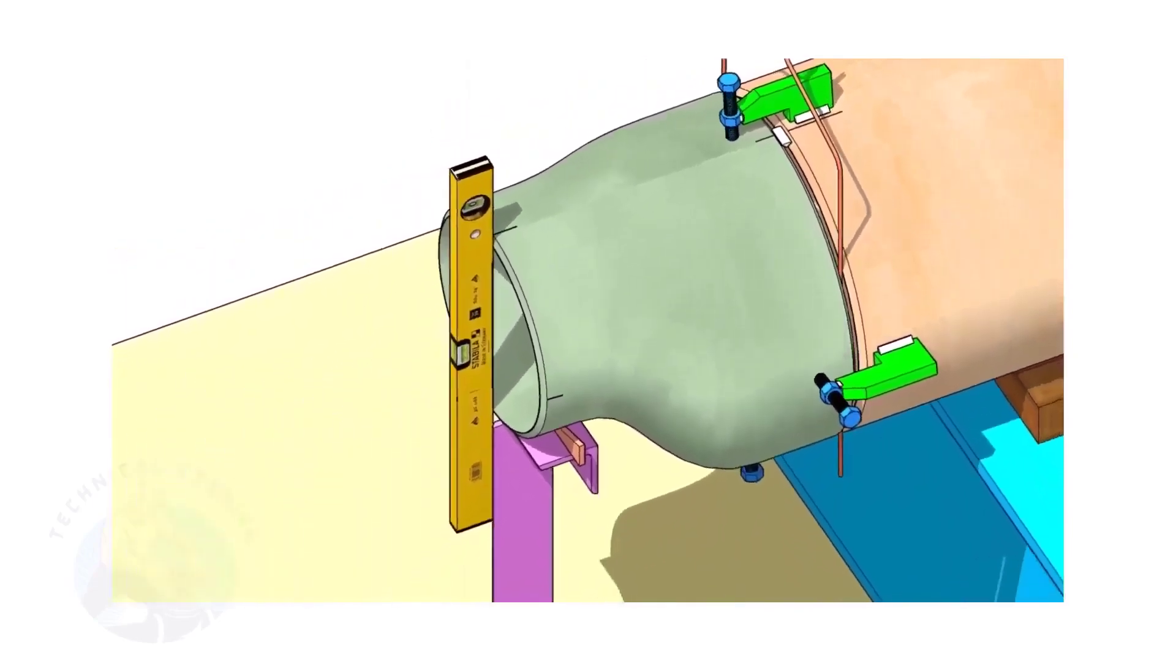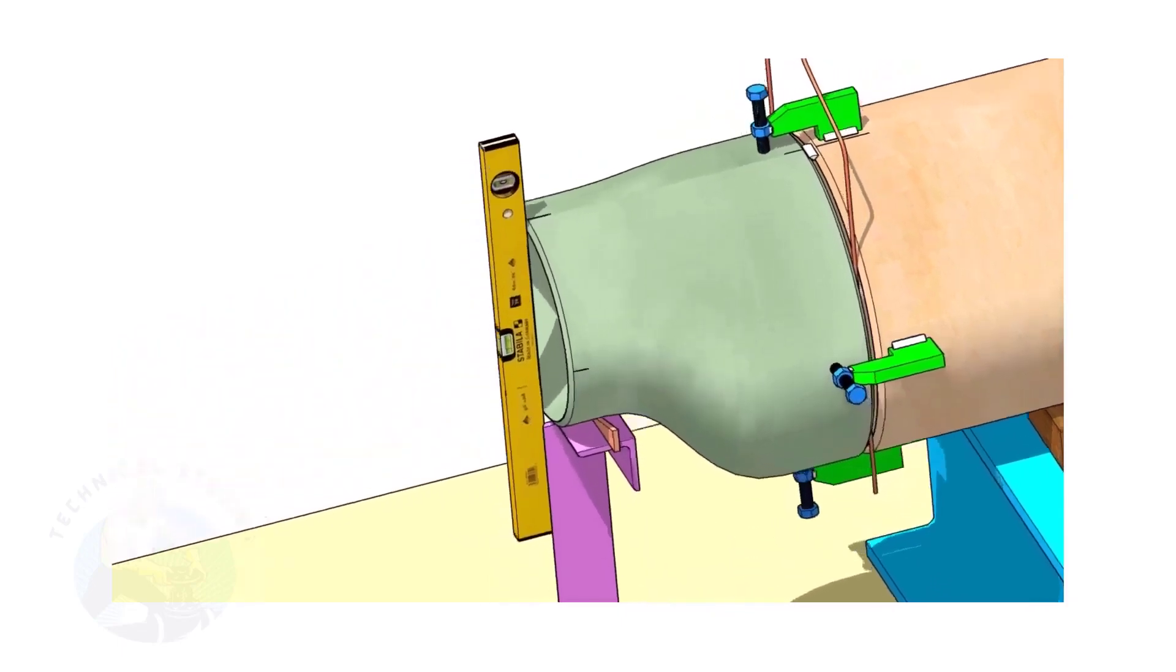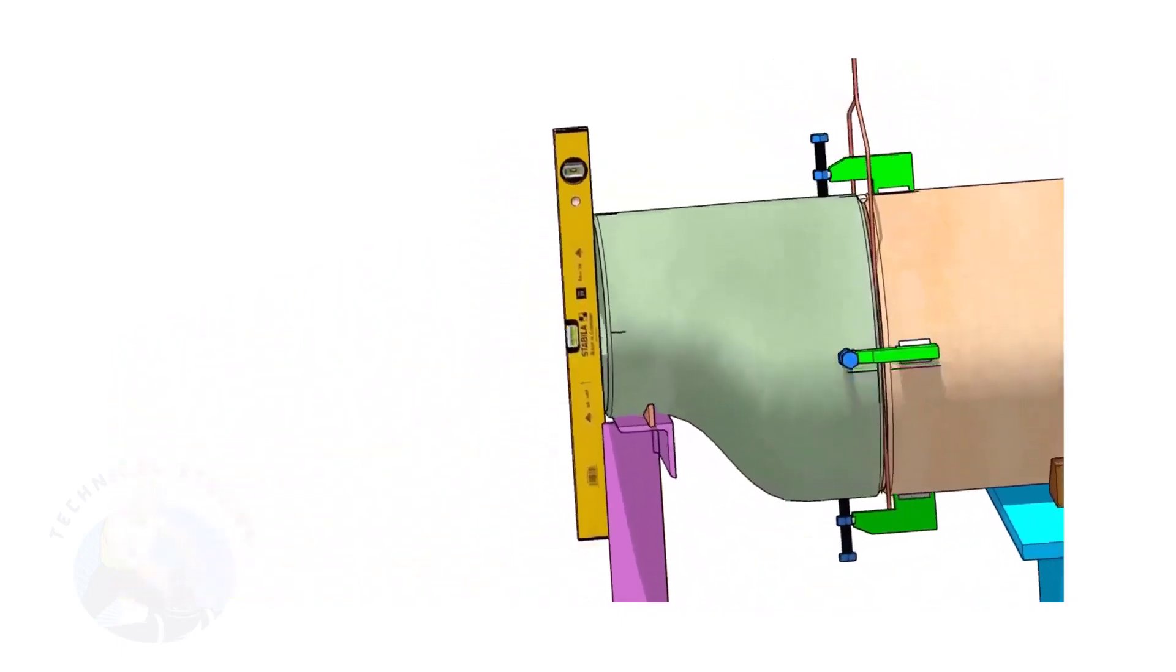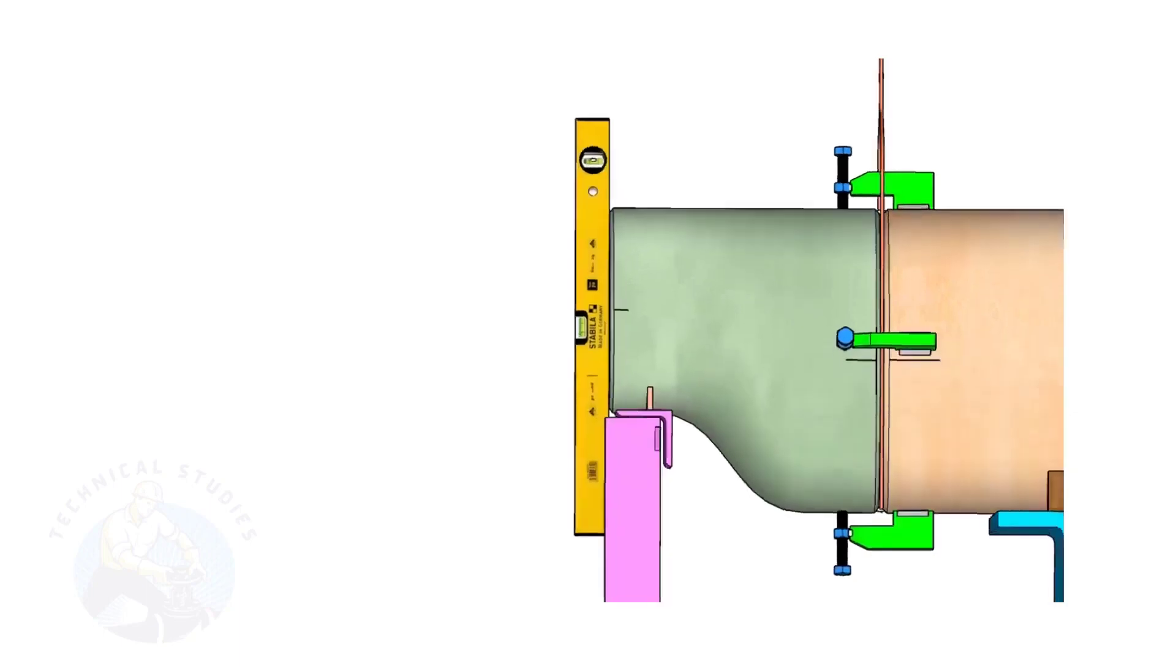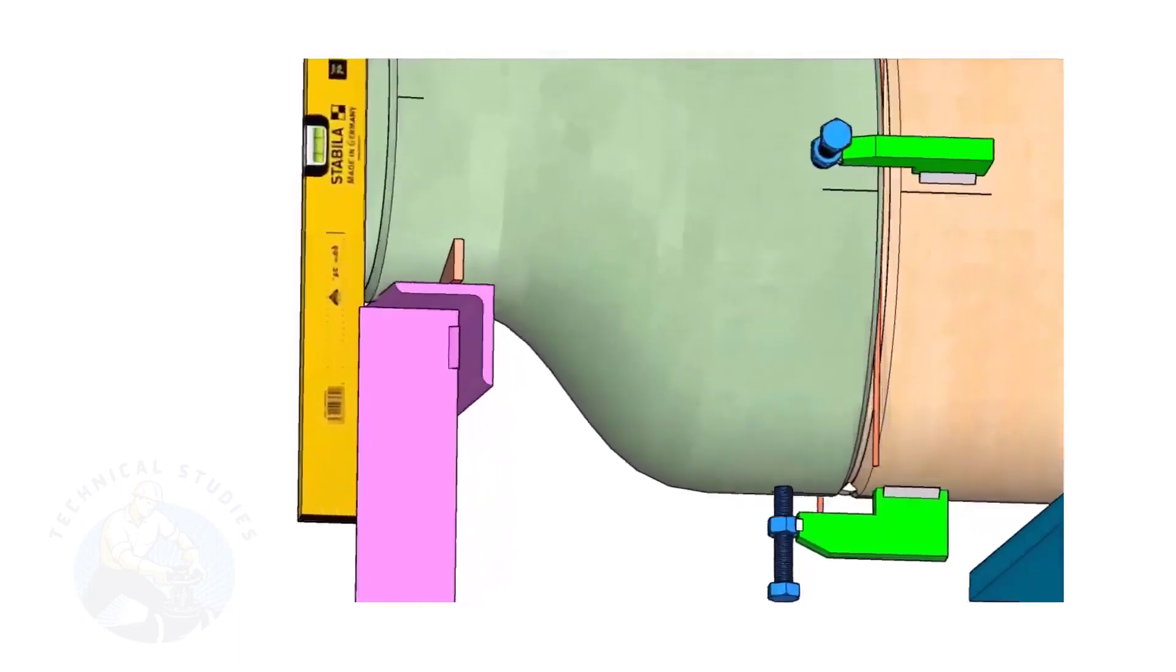Correct the levelness of the outer face of the reducer. Tack weld in the bottom side of the joint.